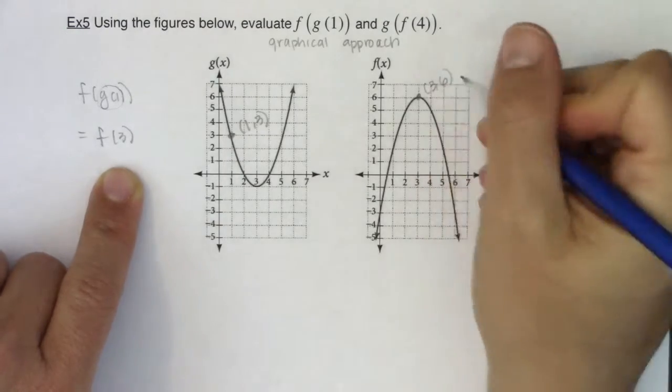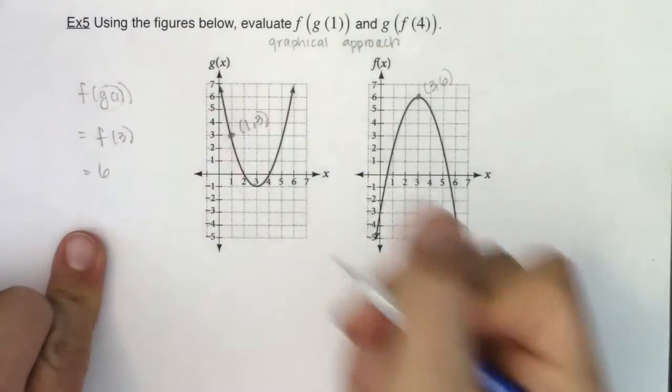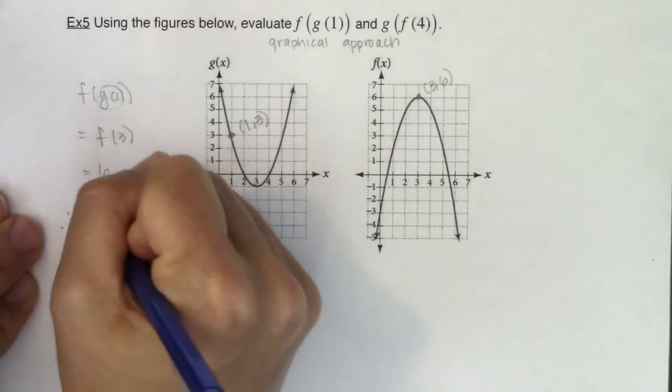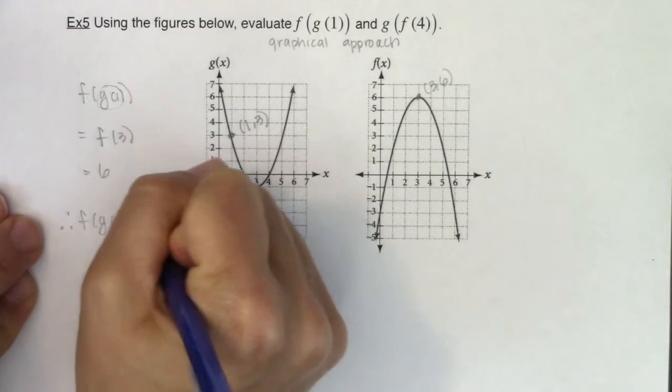So when I plug 3 into f, I get a 6 back out like so. So ultimately here we would have f of g of 1 was equal to 6.